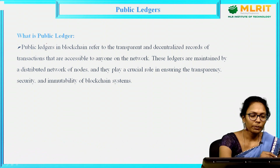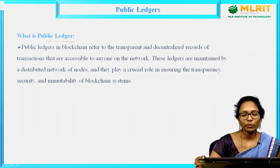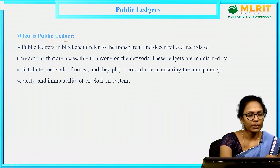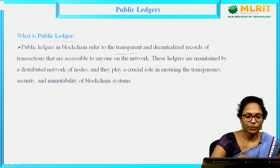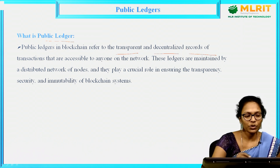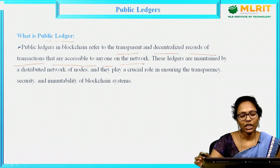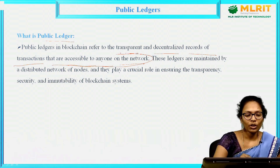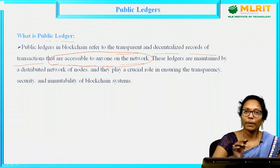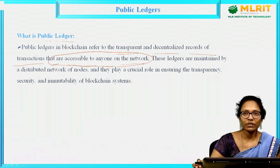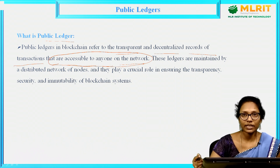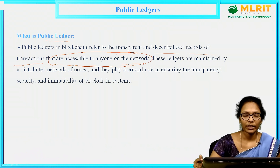What is a public ledger in terms of blockchain? A public ledger in blockchain refers to the transparent, decentralized records of transactions that are accessible to anyone on the network. Because of this feature, you are calling it as public — anyone can access this and anyone can see the content of this blockchain.